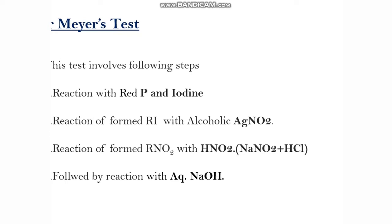The resulting solution is then treated with aqueous alkali — that is, aqueous NaOH or aqueous KOH. If we get a blood red color solution, we can understand that the alcohol is a primary alcohol. If we get a blue coloration, then it is a secondary alcohol. If the solution is colorless, then the original alcohol is tertiary. So the chemistry involved in the test can be summarized in the form of equations.